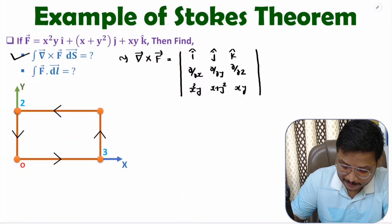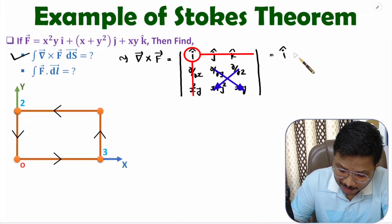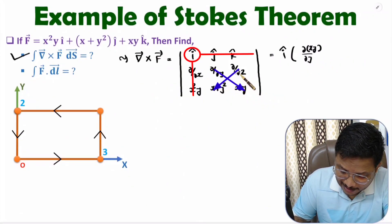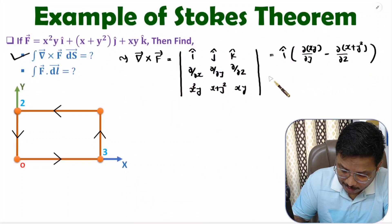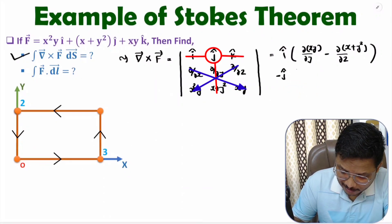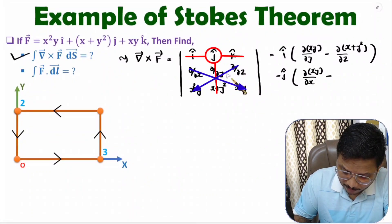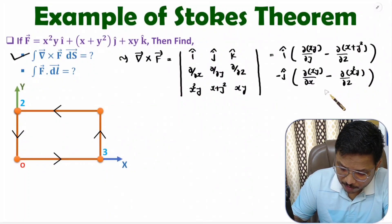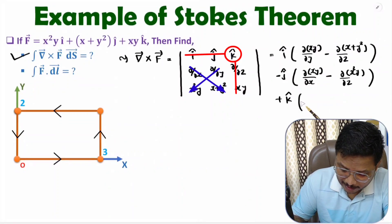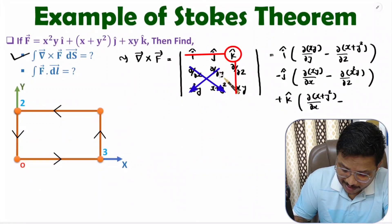We need to solve this matrix. For the i-th coordinate: del/dy of (xy) minus del/dz of (x+y²). For the j-th coordinate: minus j times [del/dx of (xy) minus del/dz of (x²y)]. For the k-th coordinate: plus k times [del/dx of (x+y²) minus del/dy of (x²y)].